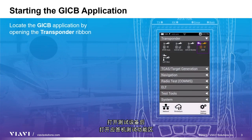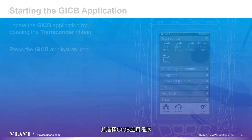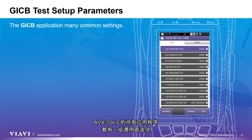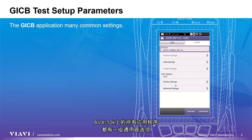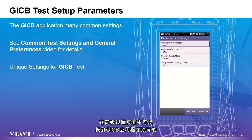After turning on your test set, open the Radio Test Transponder ribbon and select the GICB application. All applications on the AVX-10K have a set of common preferences that need to be set before testing. Our video on common test settings and general preferences goes into greater detail. Setup parameters that are unique to the GICB application are found in the Advanced Settings page.